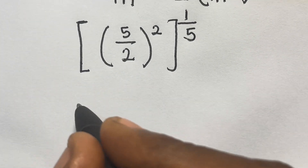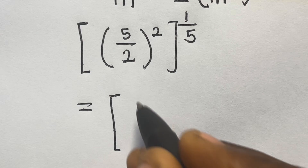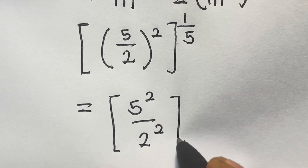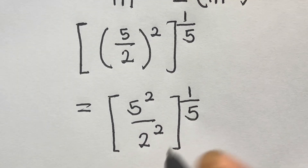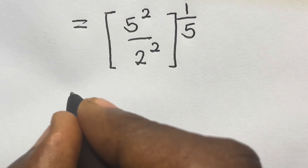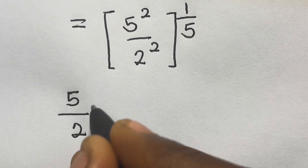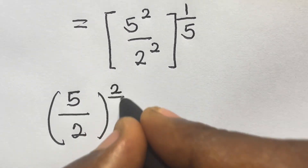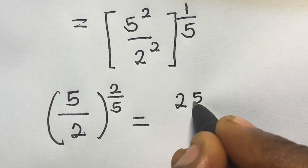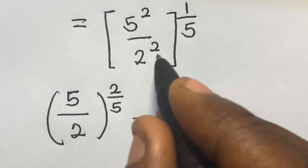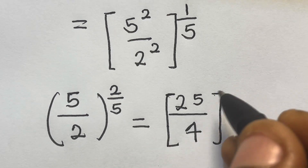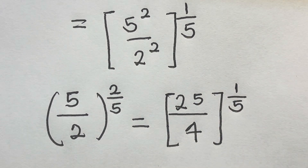So from here, this will be equal to 5 squared divided by 2 squared, then raised to the power 1 divided by 5. So we have 5 divided by 2 raised to the power 2 divided by 5 equals 5 squared gives us 25 divided by 2 squared gives us 4, then raised to the power 1 divided by 5.